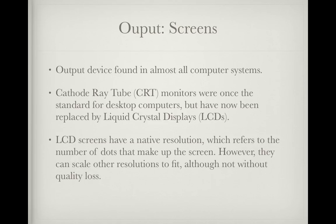The first output device is screens. They are an output device found in almost all computer systems. CRT monitors, or cathode ray tube monitors, were once standard for desktop computers but have now been replaced by LCDs, or liquid crystal displays. LCD screens have a native resolution, which refers to the number of dots that make up the screen. However, they can scale other resolutions to fit, although not without quality loss.